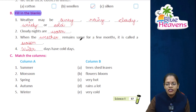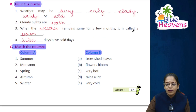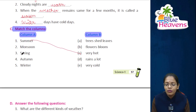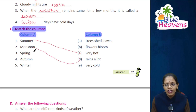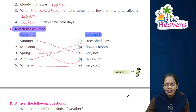Now students, let's do Exercise C — match the columns. Match column A to column B. First: summer — very hot, match with C. Monsoon — rains a lot, match with D. Next: spring — when flowers bloom, match with B. Autumn season — trees shed their leaves, match with A. Winter season — very cold, match with E. Now students, the rest of the exercise you will do yourself.